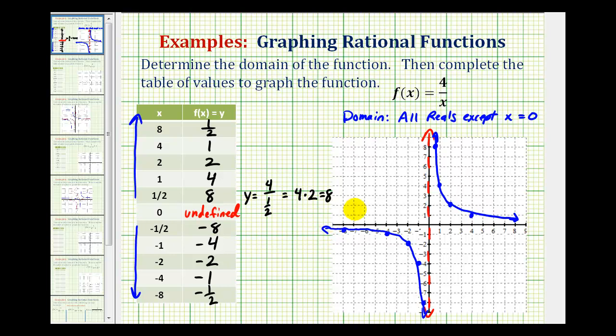There is one more thing to notice here. As x increases or decreases without bound, meaning x approaches positive infinity or negative infinity, notice how the function value would actually approach 0. Which means not only do we have a vertical asymptote at x equals 0, we also have a horizontal asymptote at y equals 0, or the x axis.